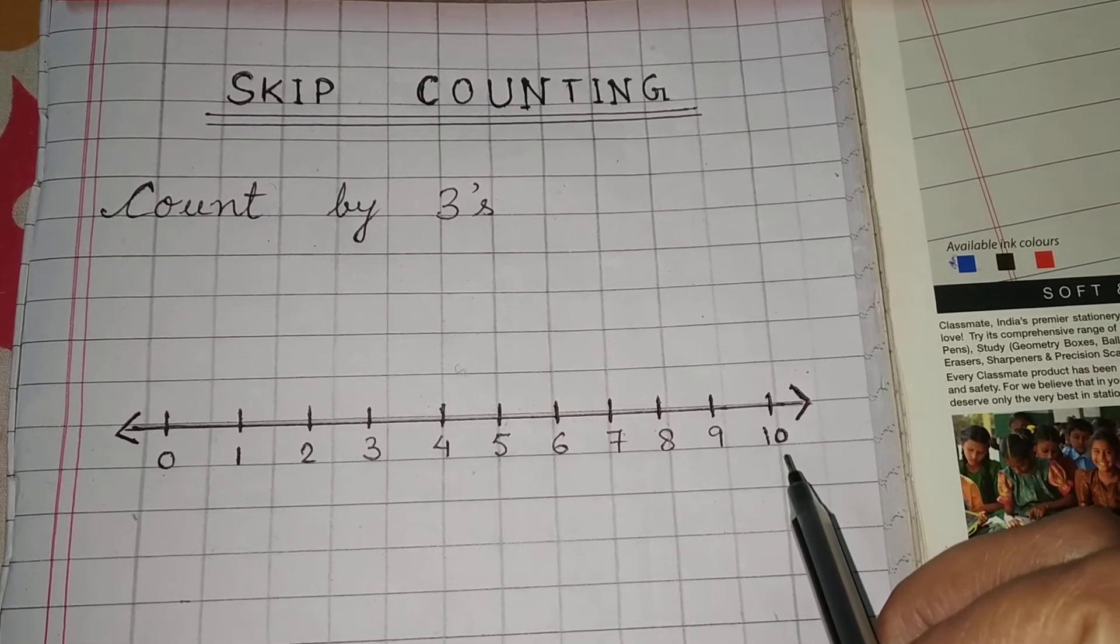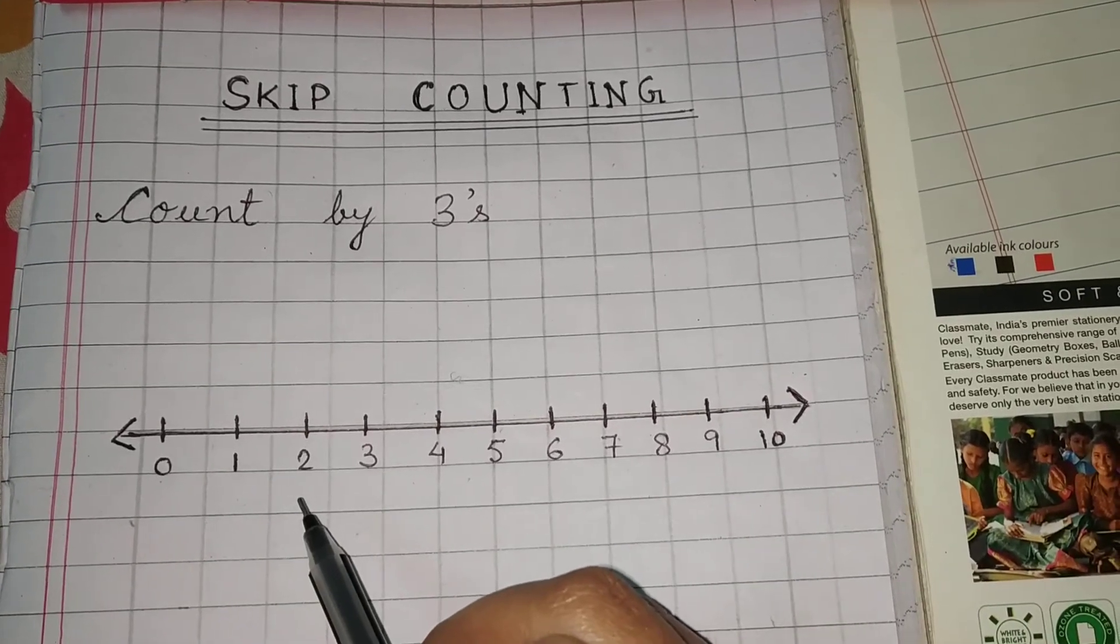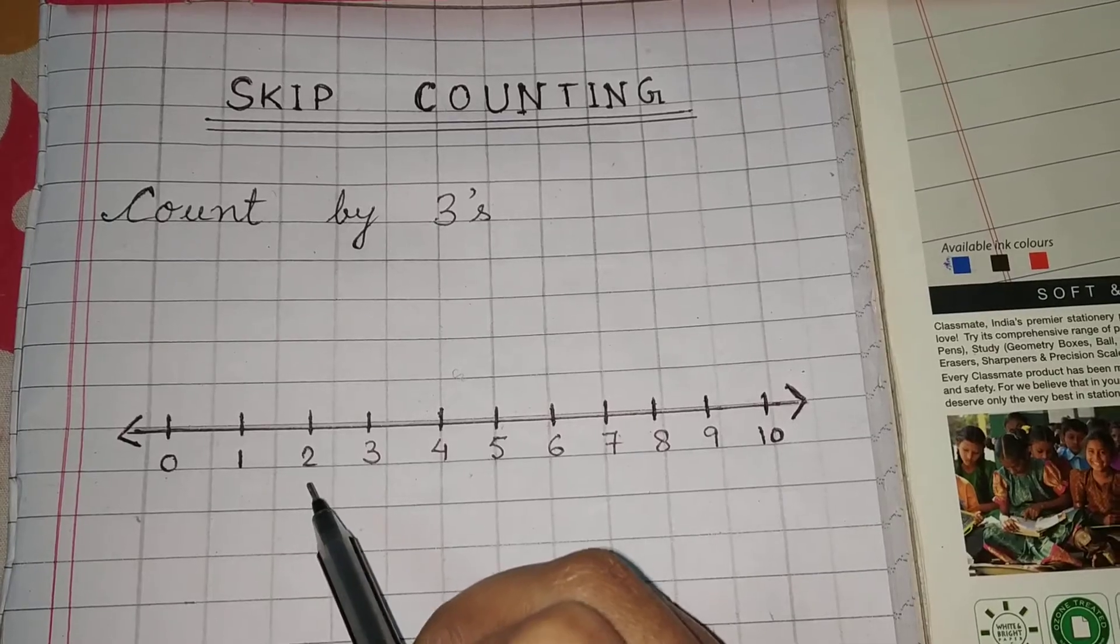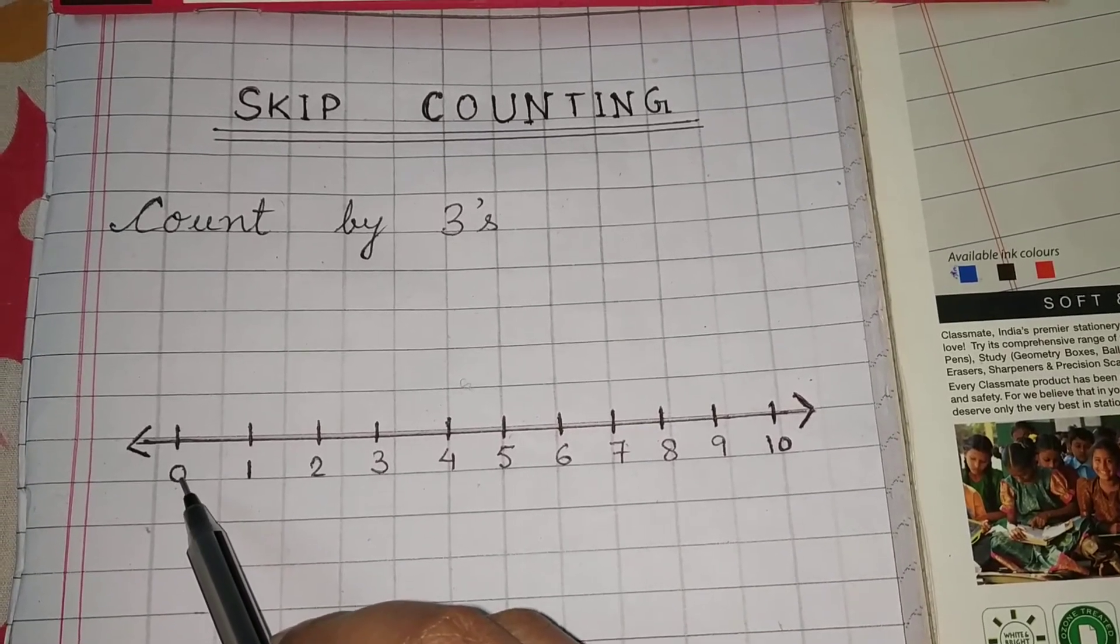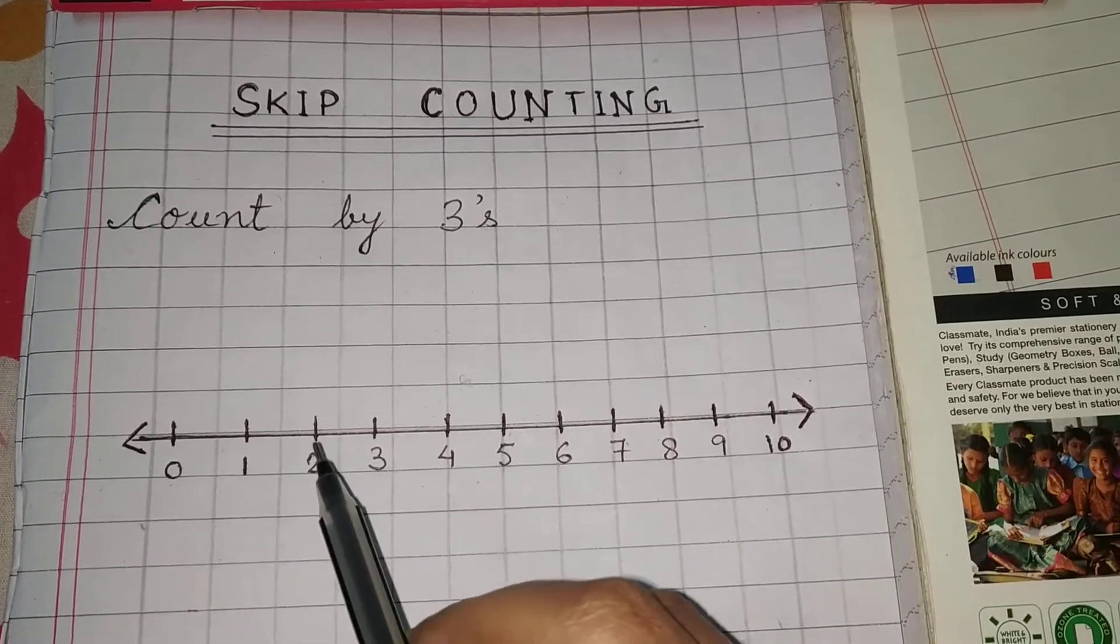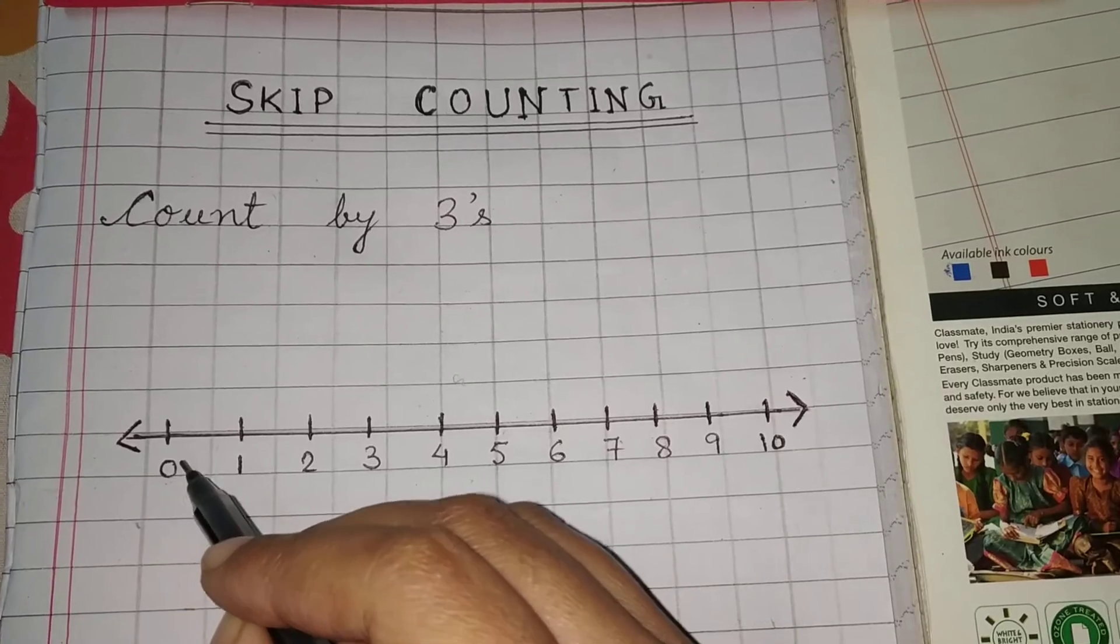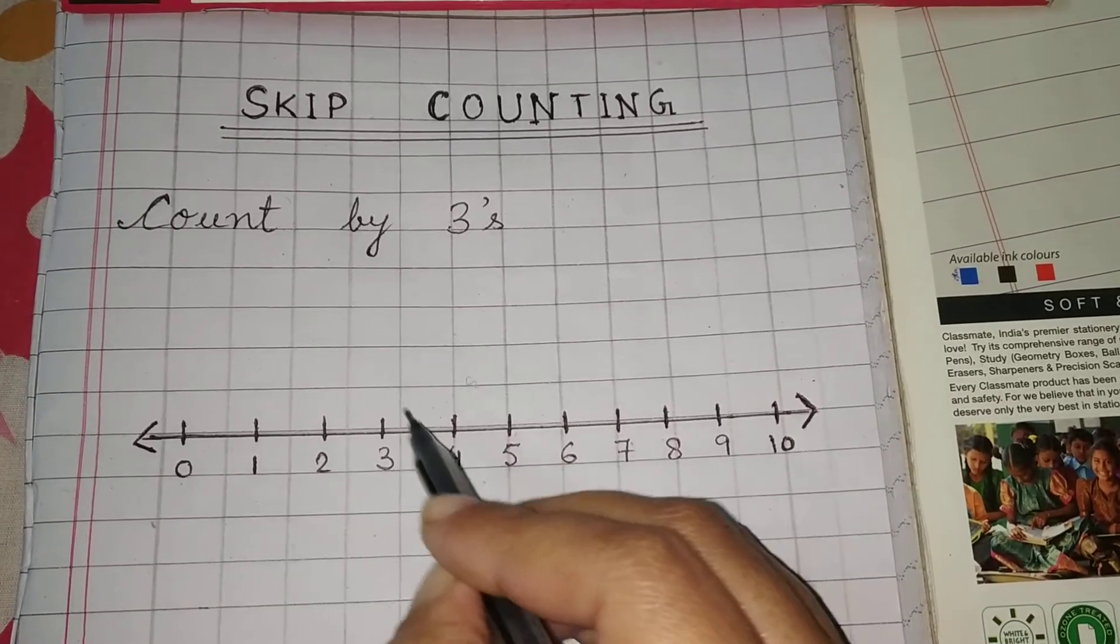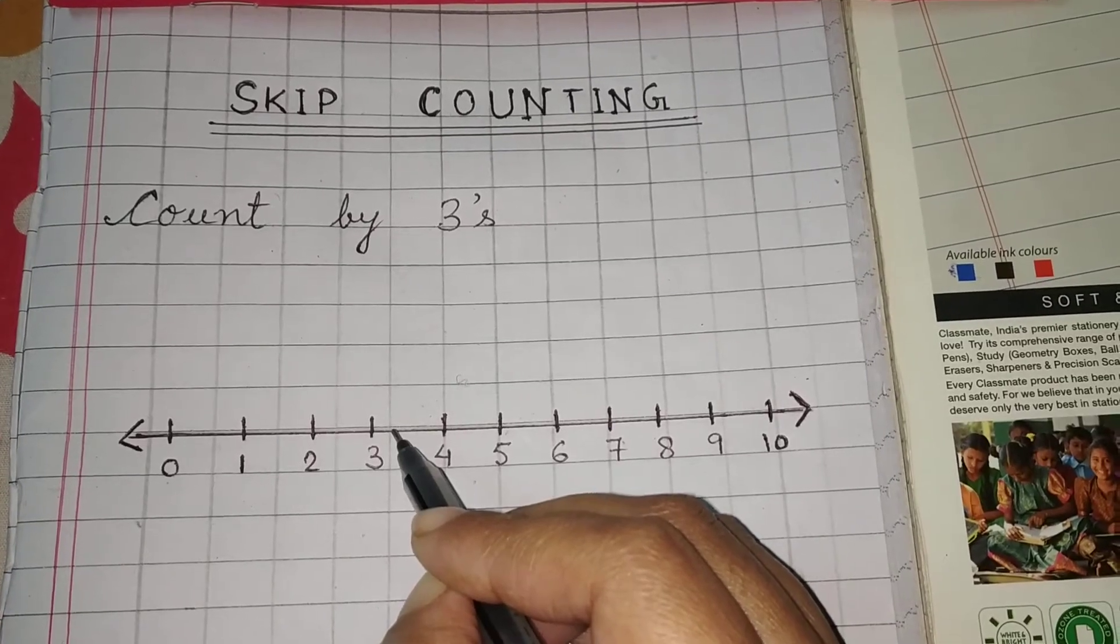So now follow students, the way I am doing count by threes. The first number is zero, one, two, three. We will draw a half circle from number zero to number three, because it is skip counting by three.